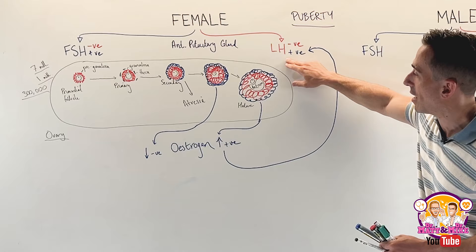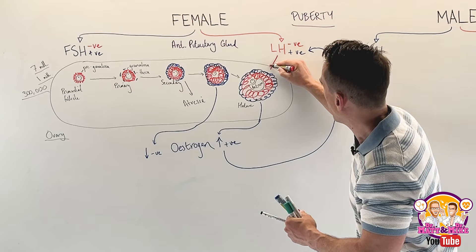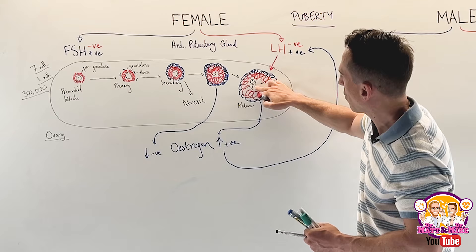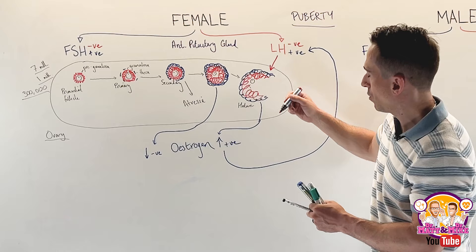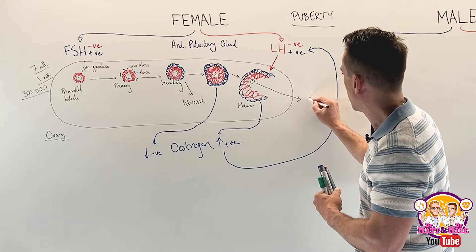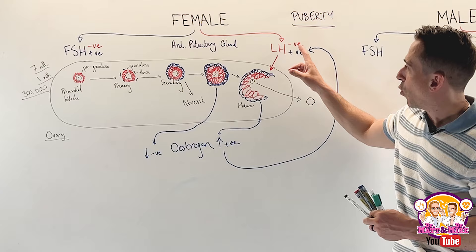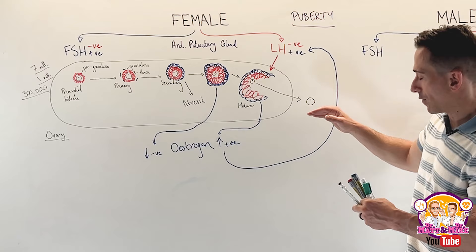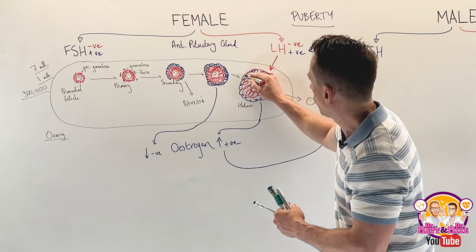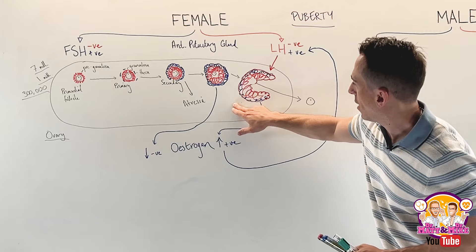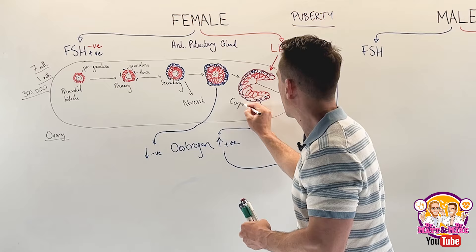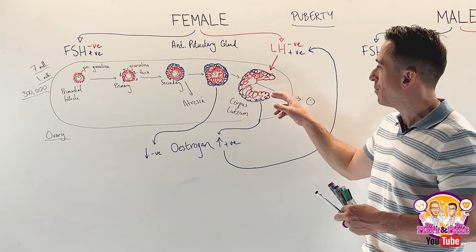This LH surge travels to the ovary and tells the mature follicle to start to break down. When it breaks down, it tells the oocyte to ovulate — to be released from the ovary. What we're now left with after the oocyte has gone is this bulk of old follicle cells, which is called the corpus luteum.